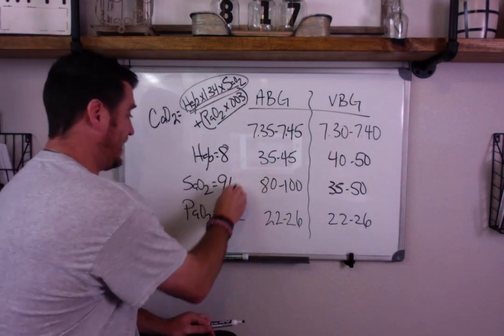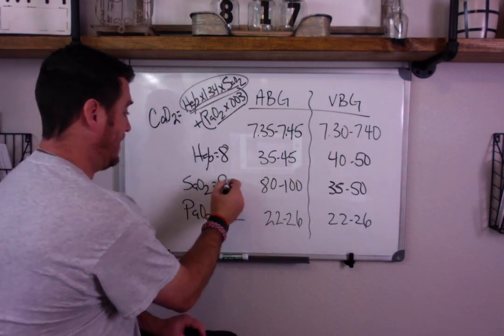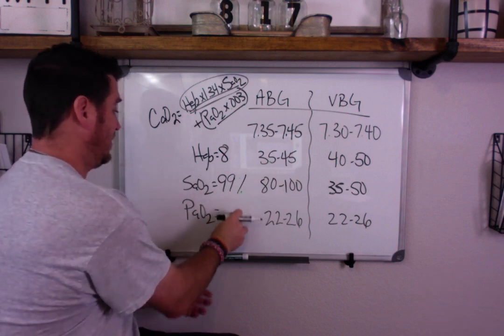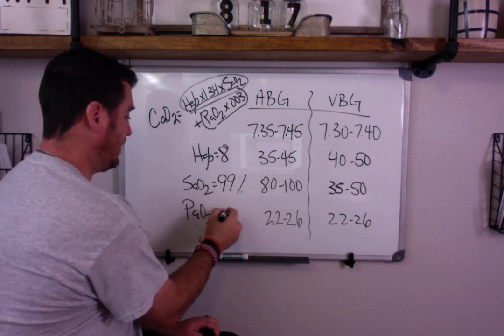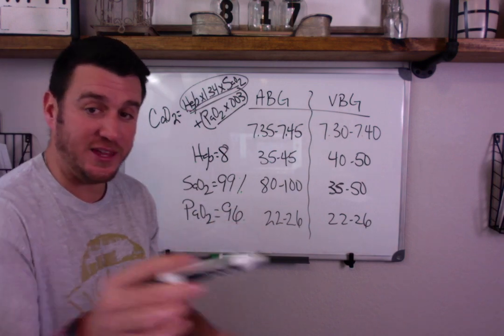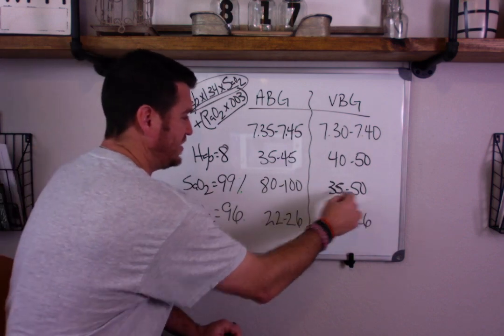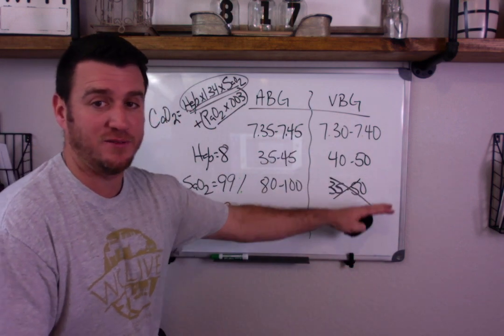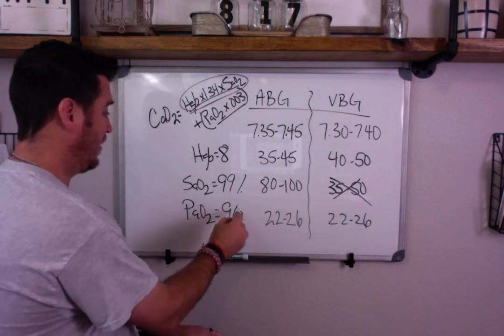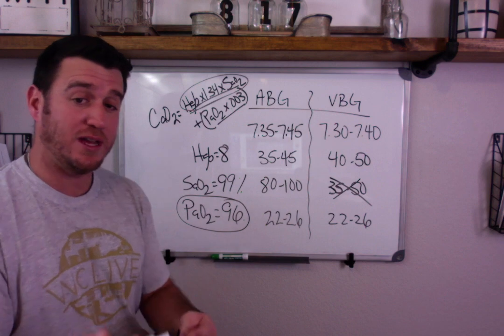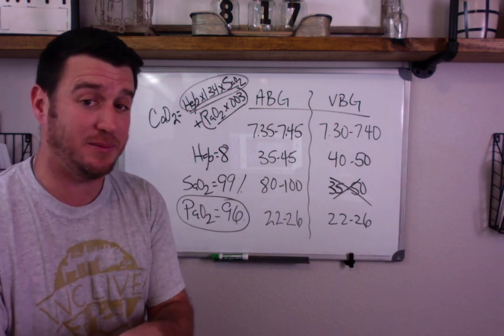Let's say we have a saturation of 99% and we have a PaO2 of 96. Now this patient, regardless of what the VBG is, this is not an indicator, so we don't even need to talk about hypoxia and VBG. We would all agree that this patient is not hypoxemic.